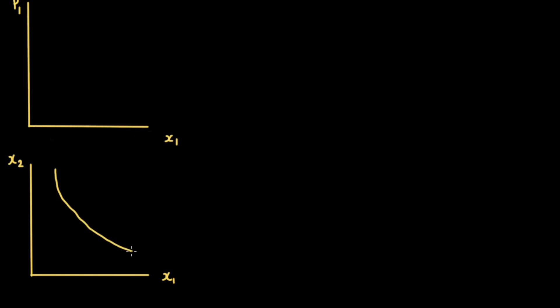Below the price-quantity map, we'll be drawing the indifference map of the consumer. On the horizontal axis is the quantity of good one, and the quantity of good two is on the vertical axis. We have an indifference curve labeled U naught and a budget line. From utility maximization, this gives us the optimal quantity that the consumer would consume for good one.